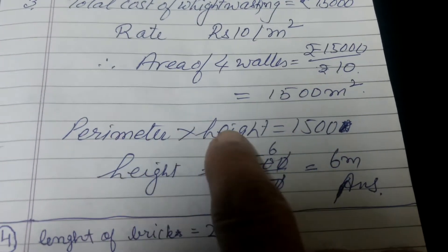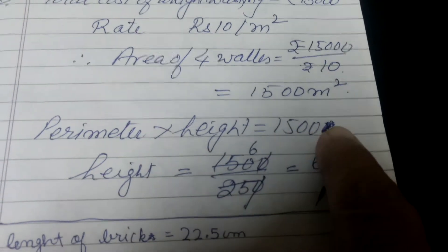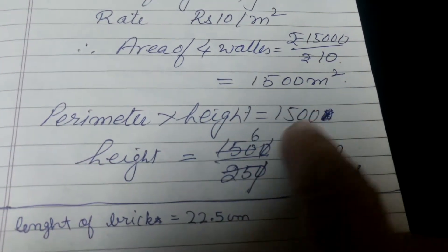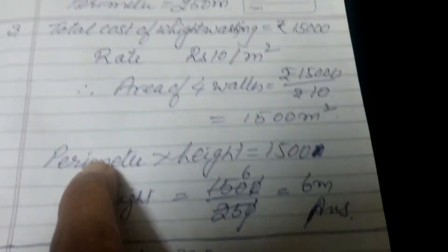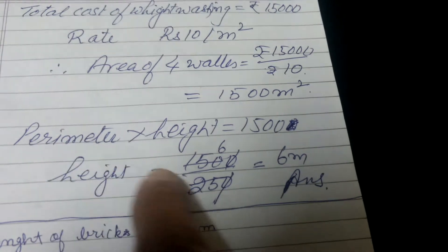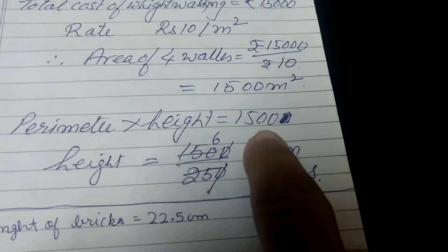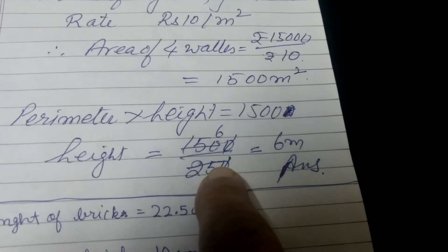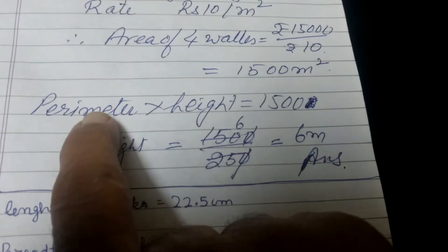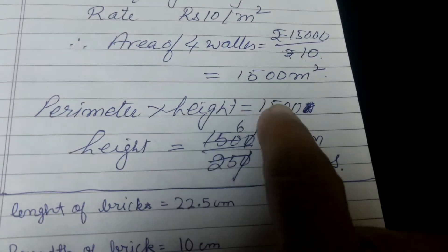So the height of the wall... We will use the area to find the perimeter to find the height, so it will be 6 meters. Our formula is perimeter into height equals area.